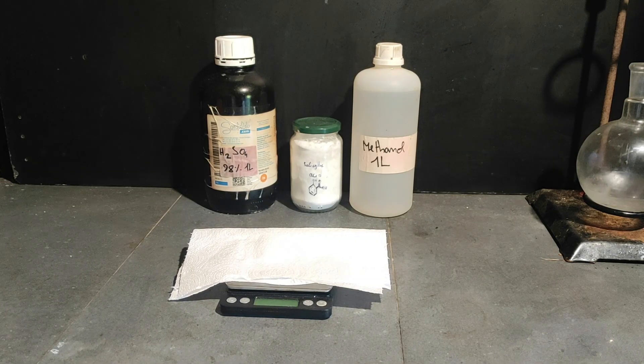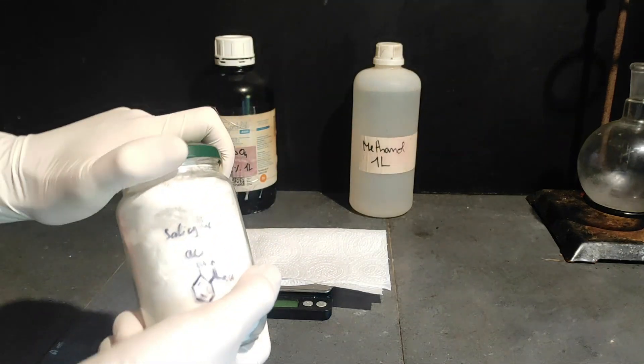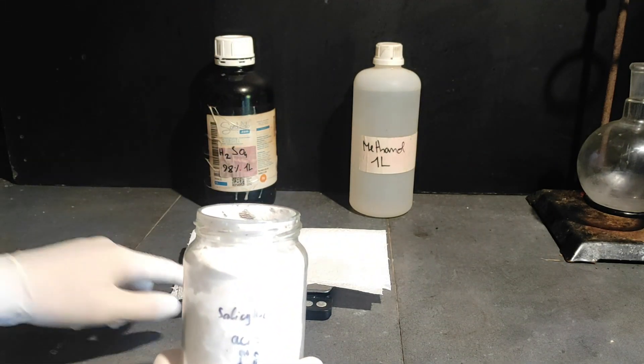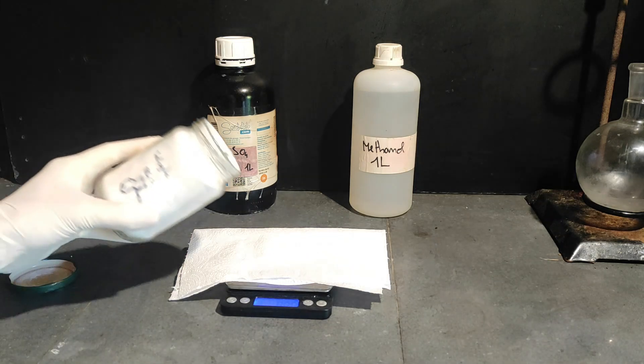For the synthesis, we will need those chemicals displayed here. I start by measuring approximately 15 grams of salicylic acid. If you don't have it as a nice powder like me, you can always make it from aspirin with only one step.